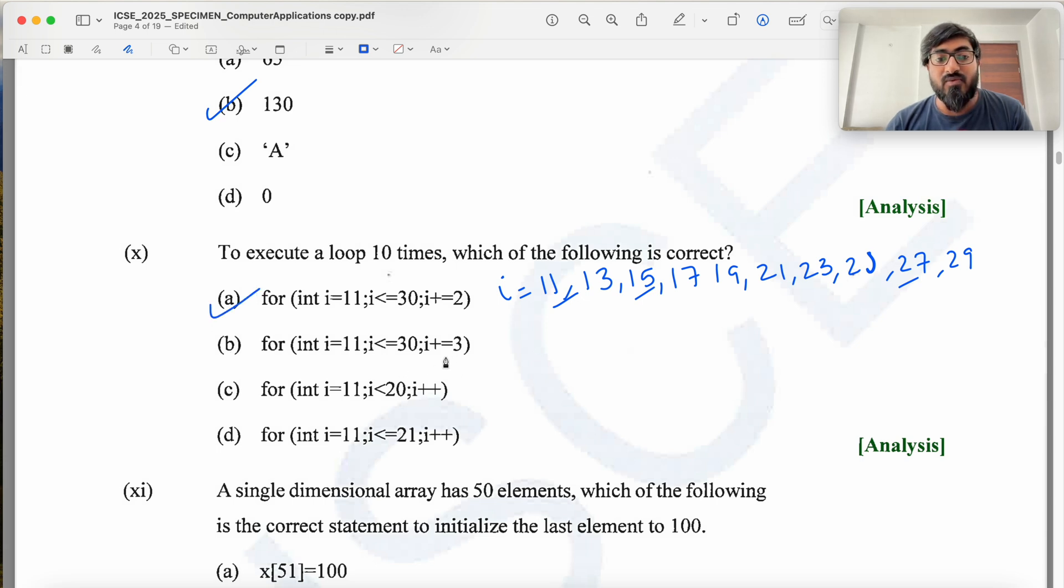If you look at this, this is plus equal to 3. So I starts with 11, less than 30. It takes 14, then 17, 20, 23, 26 and 29. So it runs for 1, 2, 3, 4, 5, 6, 7 times only. This will run from 11 to less than 20, this will run 9 times. And this will run less than equal to 20, this will run 11 times. So this is the answer.